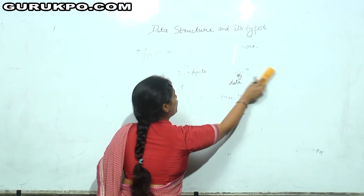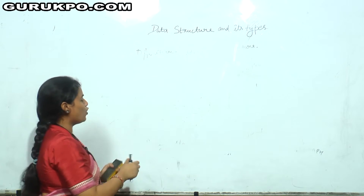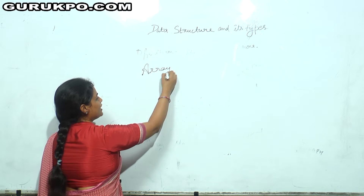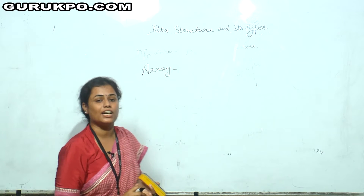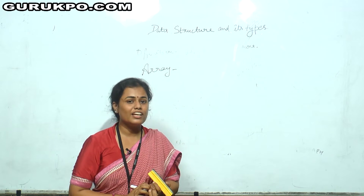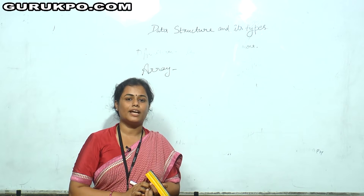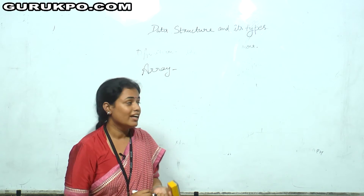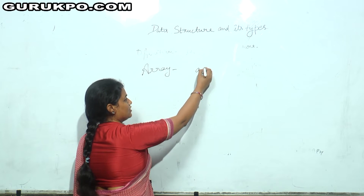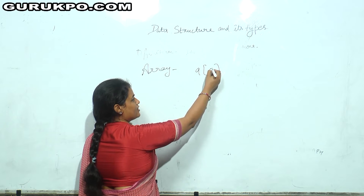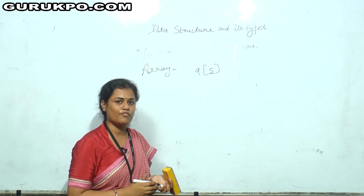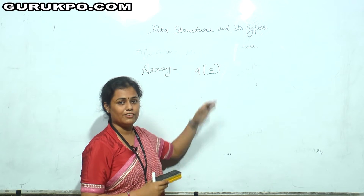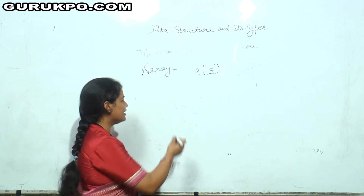What is an array? You already know about arrays. Array is a data structure that contains all similar types of data in memory locations. We can store only similar types of data, like all integer values or all character values. It is represented in C like this — you declare it and mention the size. Suppose the size of the array is 5, then you will declare a[5].